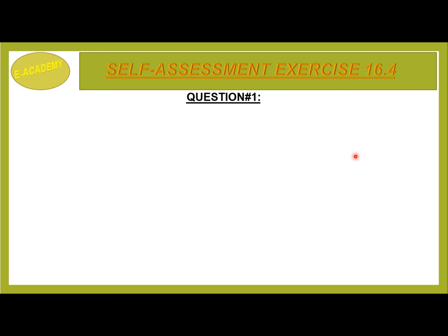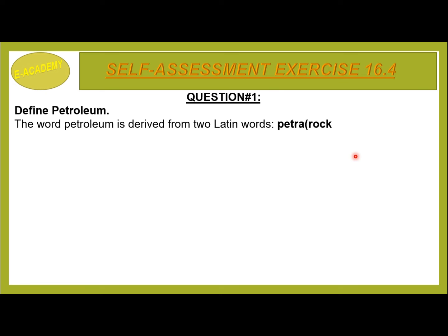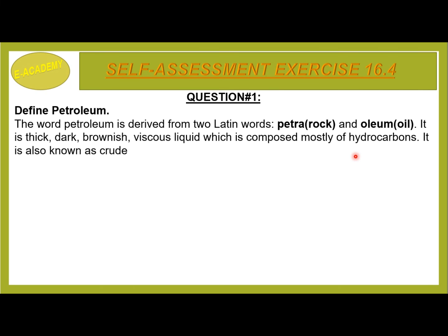Self-Assessment Exercise 16.4, Question No. 1: Define petroleum. The word petroleum is derived from two Latin words: 'petra' meaning rocks and 'oleum' meaning oil. It is a thick, dark brownish viscous liquid composed mostly of hydrocarbons. It is also known as crude oil.